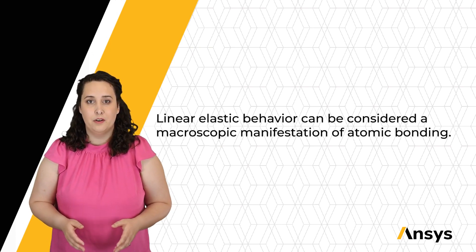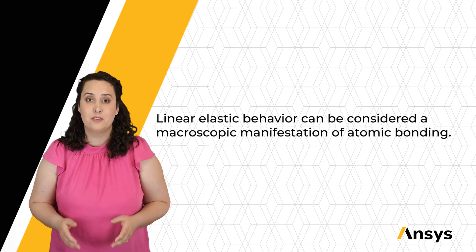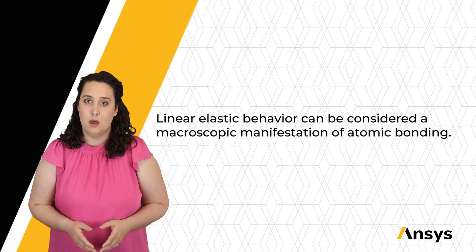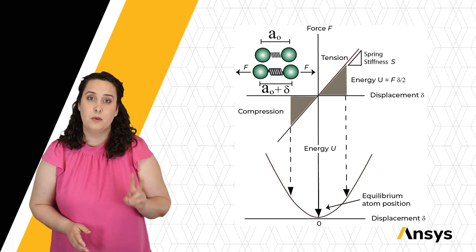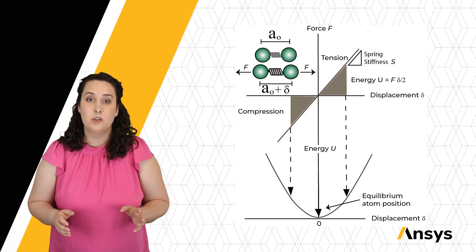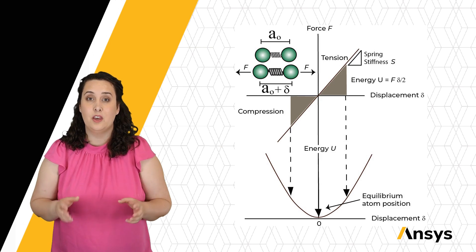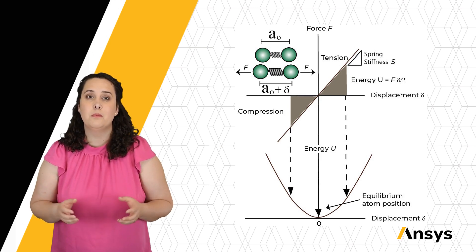Linear elastic behavior can be described as a macroscopic manifestation of atomic bonding. Let's start with a simple example: two atoms bonded together. We can visualize this as our atoms being held together by a spring with some length A0.